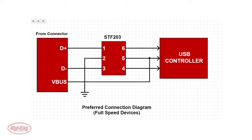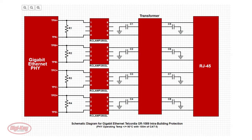There are many types of TVS diodes developed today for different applications. For example, the STF203 device integrates passive components and TVS diodes for USB applications. This device provides termination, filtering, and ESD protection for an upstream USB port. There are also TVS diodes designed to protect high-speed data interfaces from ESD and lightning, like the R-Clamp 2502L, which is used in Gigabit Ethernet applications.